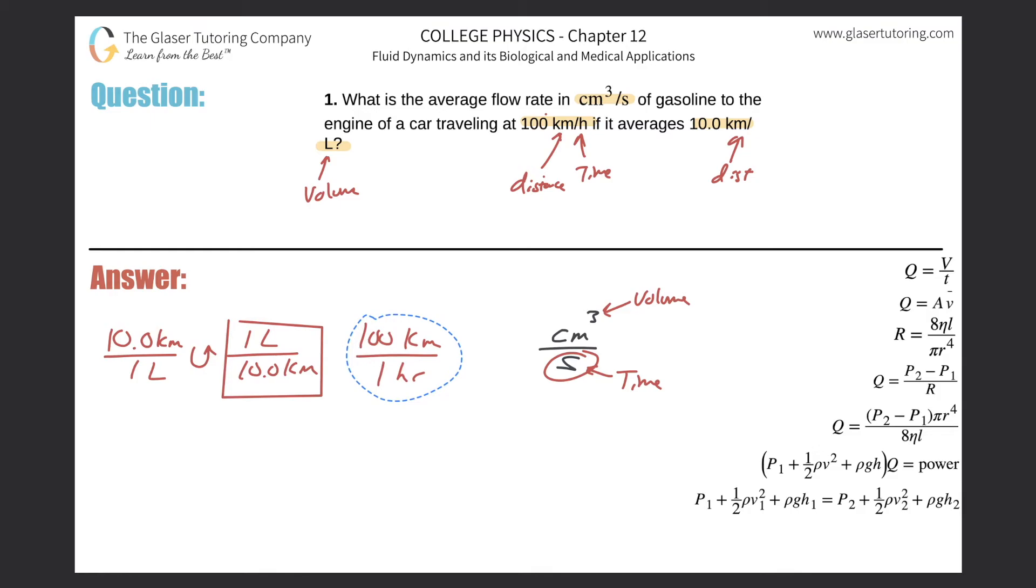Let me just erase this part so we don't get too confused. Now realize when I multiply these two together, the kilometers will magically cancel. What are we left with? We'd be left with 100 liters per 10 hours. You could divide the 100 and the 10 if you wanted—it's going to be 10 liters per hour.